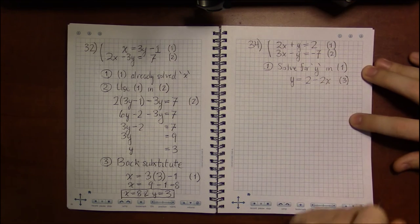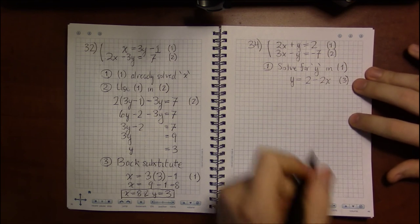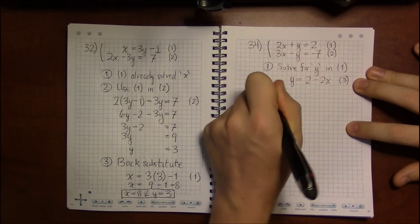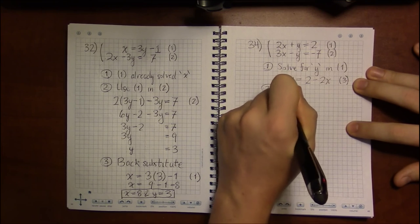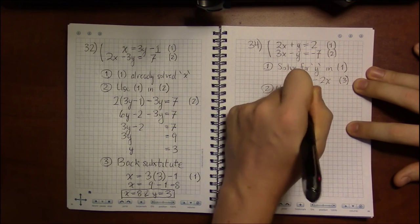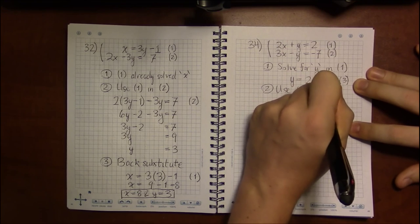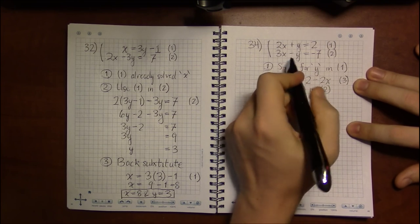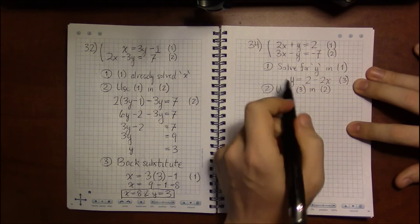All we'll have to do is subtract 2x from both sides, and we'll get y equals 2 minus 2x. And we'll label this as a new equation, kind of intermediate step, and use this in equation 2, the one we haven't used yet, the equation we haven't used yet.